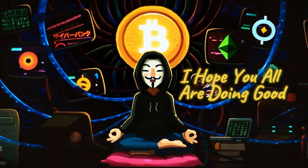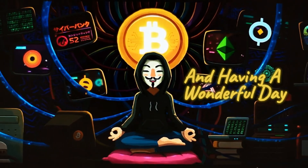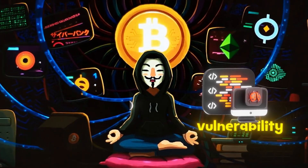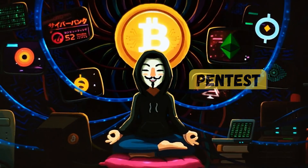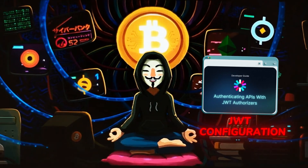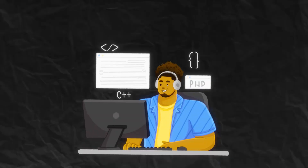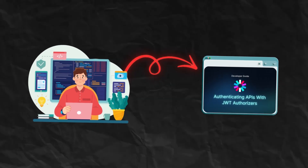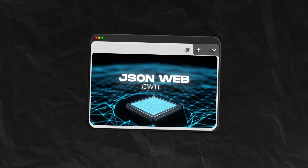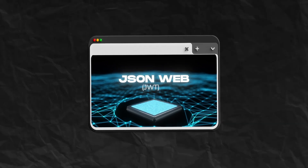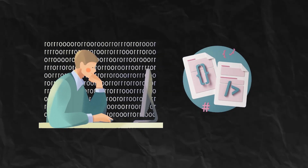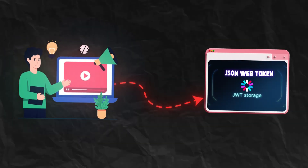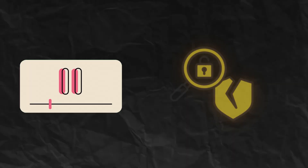Hi everyone, I hope you're all doing well. I have recently discovered a very interesting vulnerability in one of my recent pen tests, where I was able to abuse the JWT configuration in a very unique way. I have not seen many people use this particular method, but the impact is tremendous and the way we are going to exploit it is actually very simple.